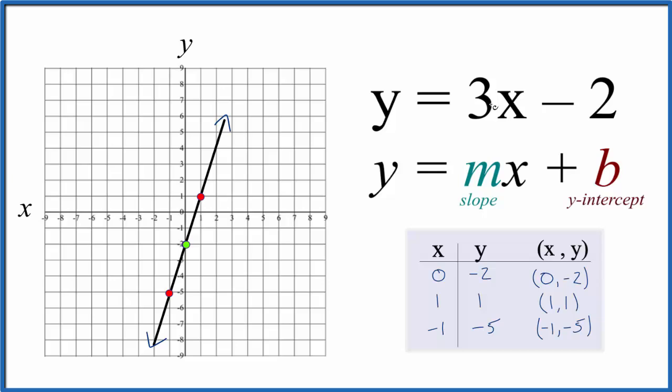Now we can use the slope to do the rest of the graph. Instead of 3, let's think of this as 3 over 1, it's the same thing, but now we can say we have a rise over run.